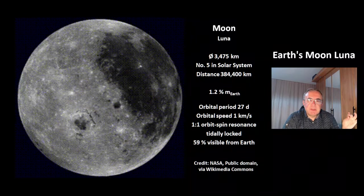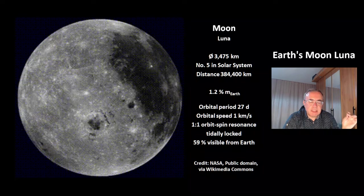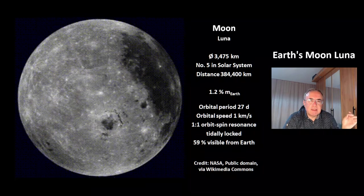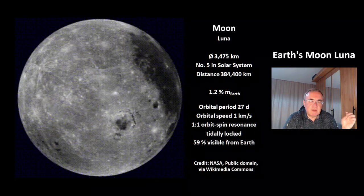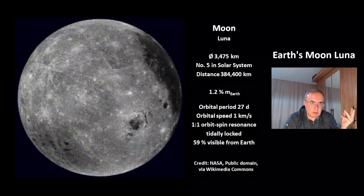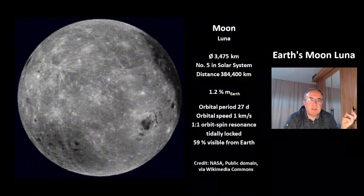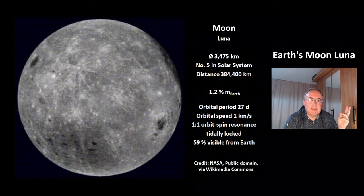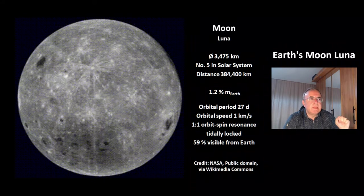The size of the Moon is 3,475 km, which makes it number 5 in size in the Solar System. Only 3 of the 4 Galilean Moons of Jupiter and the Saturn moon Titan are bigger than our Moon.